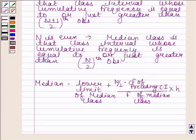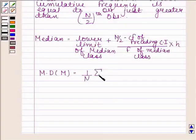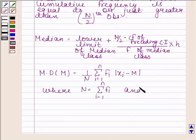After this, we find the deviation of each xi from M, that is x1 minus M, x2 minus M, and so on. Then in the third step, we find the absolute value of each deviation, and in the last step, we find the mean of the absolute values of the deviations. The mean deviation about median equals 1 by N into summation of fi into mod(xi minus M), where N equals summation of fi and M equals median.